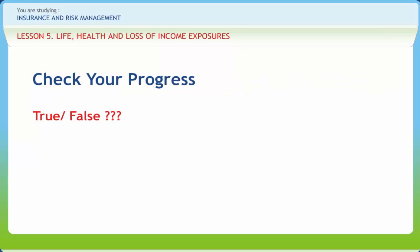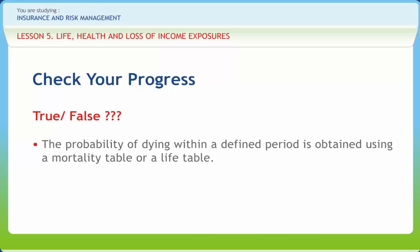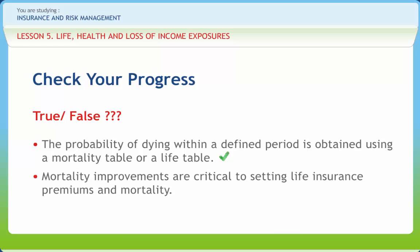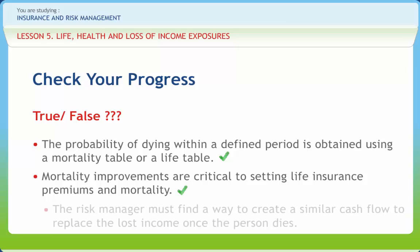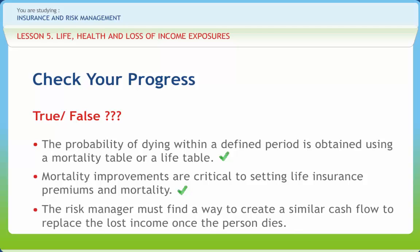Now let us check if we have understood the various concepts discussed in this lesson. The probability of dying within a defined period is obtained using a mortality table or a life table — Right. Mortality improvements are critical to setting life insurance premiums and reserves — Right. The risk manager must find a way to create a similar cash flow to replace the lost income once the person dies — Right.